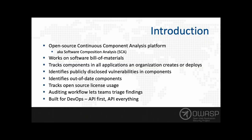Dependency Track is an open source continuous component analysis platform. Gartner and Forrester may call that software composition analysis — I think that's a terrible term because it doesn't take in environmental things, runtime, and it's specific to software. As we all know, hardware also has vulnerabilities, and Dependency Track monitors those components as well.